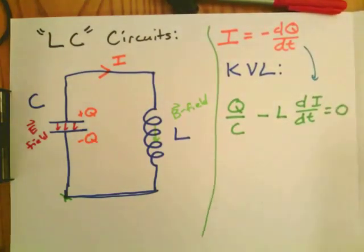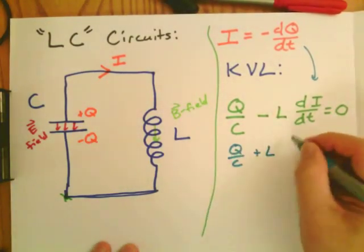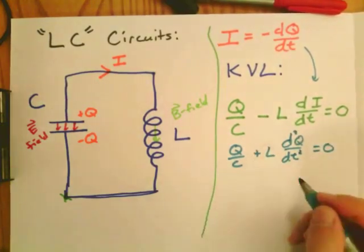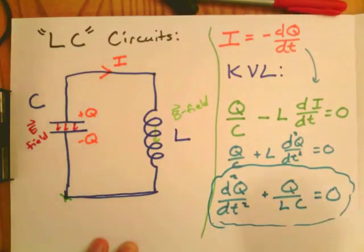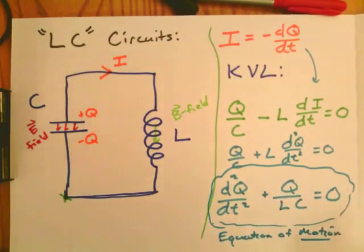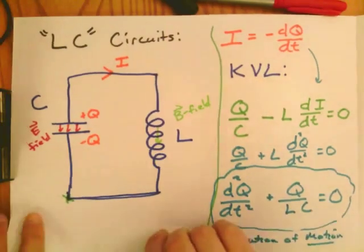We take advantage of the negative sign to rewrite this as d²Q/dt², and we rearrange everything into an equation of motion, which is a second-order differential equation.